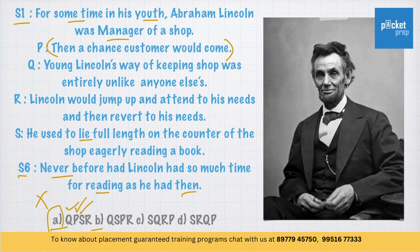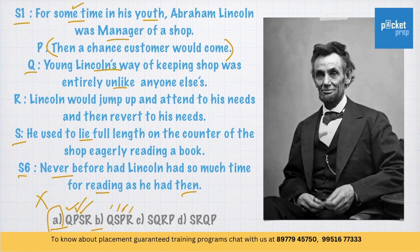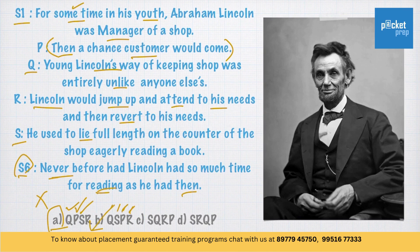Now let's try Option B: Q, S, P, R. 'For some time in his youth, Abraham Lincoln was manager of a shop.' Then Q: 'Young Lincoln's way of keeping shop was entirely unlike anyone else.' Then S: 'He used to lie full length on the counter of the shop, eagerly reading a book.' Then P: 'Then a chance customer would come.' And finally R: 'Lincoln would jump up and attend to his needs and then revert to his needs.' And finally statement 6: 'Never before had Lincoln had so much time for reading as he had then.' Option B — Q, S, P, R — follows a sequence.